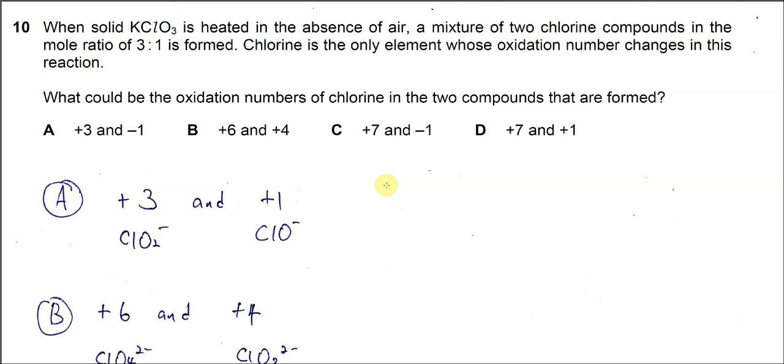Question number 10. When solid KClO3 is heated in the absence of air, a mixture of two chlorine compounds in the mole ratio 3 to 1 is formed.